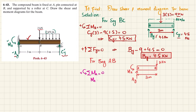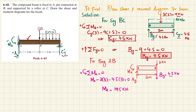Also, by Newton's third law, B_Y acts downward on segment AB with a value of 4.5 kN. So the moment equation becomes: M_A − 2 × 3 − 4.5 × 3 = 0. Solving this gives M_A = 19.5 kN·m.